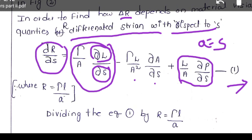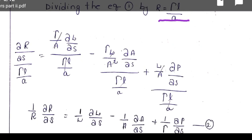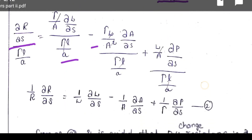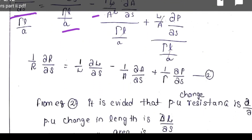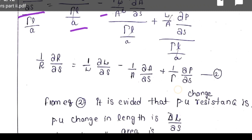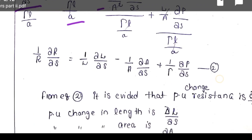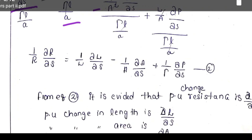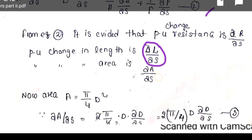Simply remember R equal to rho L by A. Dividing equation 1 by rho L by A: dou R by dou S divided by rho L by A gives us: 1 by R times dou R by dou S equal to 1 by L times dou L by dou S, minus 1 by A times dou A by dou S, plus 1 by rho times dou rho by dou S. We make this equation 2. From equation 2, it is evident that per unit change in resistance is dou R by dou S, per unit change in length is dou L by dou S, and per unit change in area is dou A by dou S.